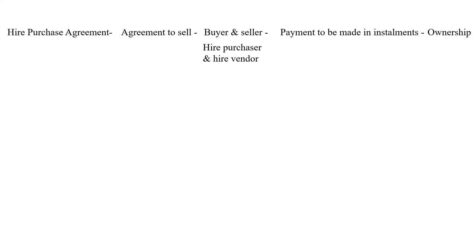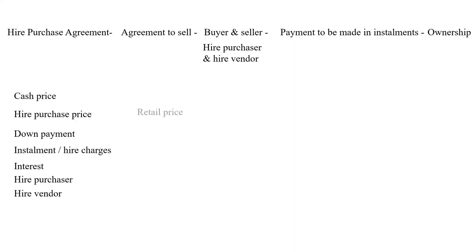Now, certain important terms you should know before moving on to interest calculation: cash price, hire purchase price, down payment, installment, interest, hire purchaser, and hire vendor. What is cash price? Cash price is the retail price of a product. When a buyer buys a product and makes immediate payment, he pays the retail price — this is the price at which the product is purchased immediately for cash.